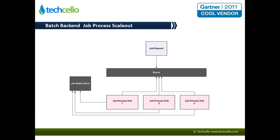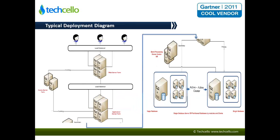This is something that you could use to scale out your back-end jobs processing as well. What you're seeing now is a typical deployment diagram of an application. As you can see, you have a load balancer. Behind that is your web server farm. You have a cache server farm, which is also about distributed caching.